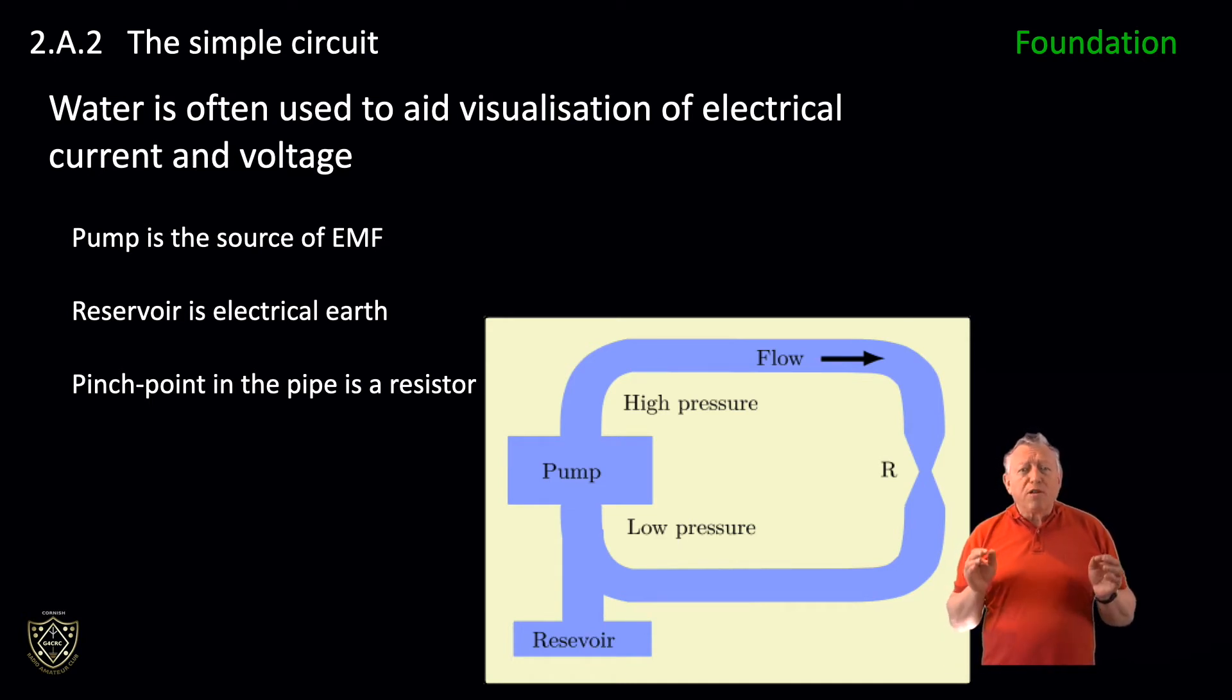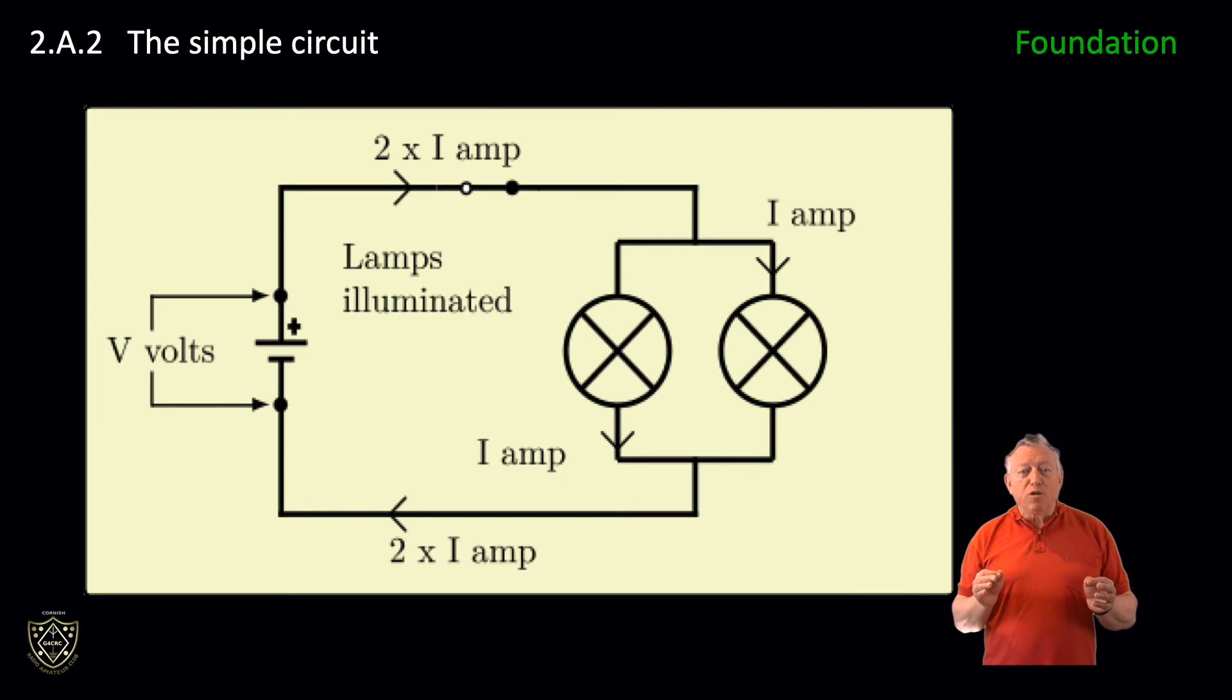The high pressure at the top of the pump is analogous to a high potential on one terminal of the cell. This helps us to visualize why, with two resistances in parallel, the parallel combination of the two lamps in the graphic has less resistance than either a resistor alone. Using the water analogy, the water now has two pipes to flow down. And so this is like an equivalent pipe of twice the cross-sectional area of one pipe alone. The opposition to the water flow is half.